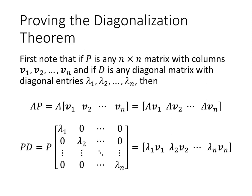Before proving this, note a useful observation. If P is an n-by-n matrix with columns V₁ through Vₙ and D is any diagonal matrix with entries λ₁, λ₂, …, then AP has columns AV₁, AV₂, and so on, while PD has columns λ₁V₁, λ₂V₂, and so on — scaling each column of P by the corresponding diagonal entry of D. This eigenvalue-eigenvector relationship is exactly the key idea behind the proof of the diagonalization theorem.